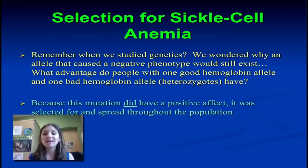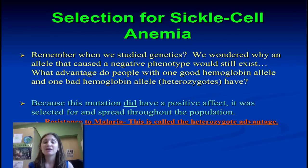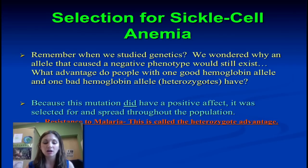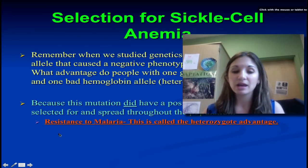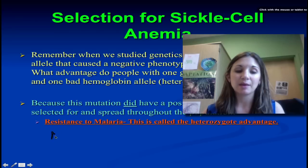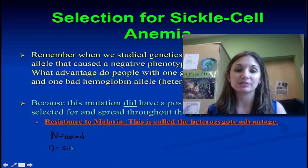The advantage is that if you have the sickle cell trait — that is, you have the mutated hemoglobin — you are immune to malaria. This is called the heterozygote advantage. If we think of normal hemoglobin as capital N because normal is dominant, and lowercase n as the sickle cell hemoglobin, there are three possible genotypes: homozygous dominant (NN), heterozygous (Nn), or homozygous recessive (nn).